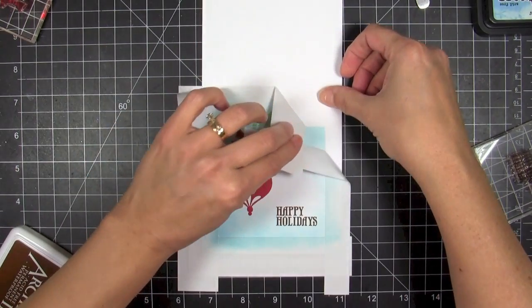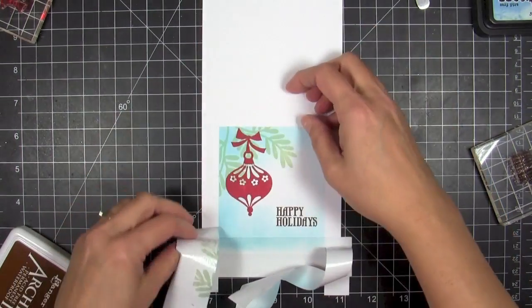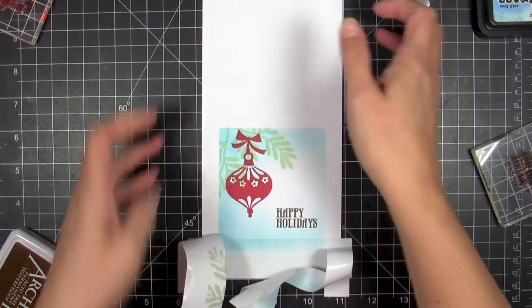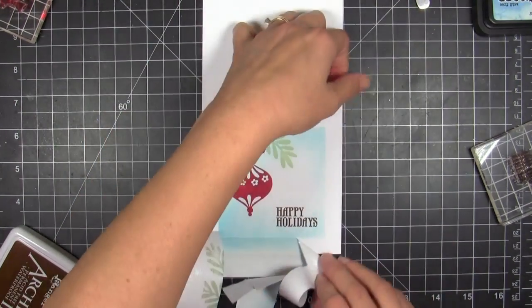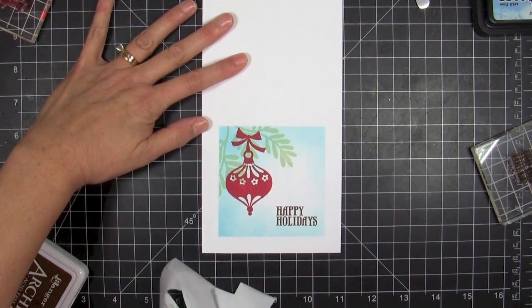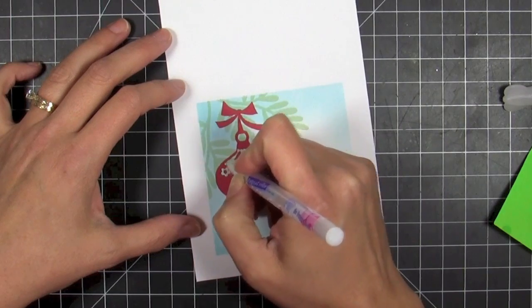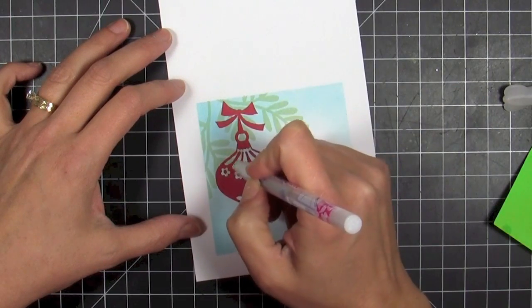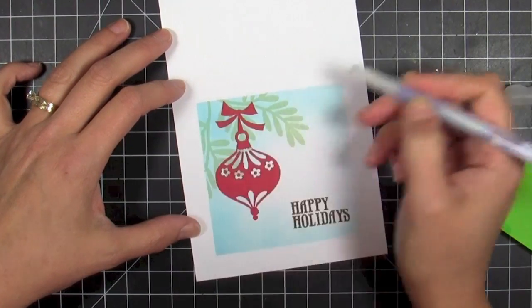Here's where the magic starts to happen. When you start peeling away the mask, you see this gorgeous hue of blue in this perfectly, sharply-edged square shape. Then you can go ahead and start adding some accents.